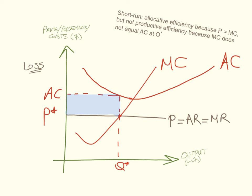Here is another short-run situation where the firm is achieving allocative efficiency because price equals marginal cost, but not productive efficiency because marginal cost does not equal average cost at the profit-maximising level of output. At Q*, where marginal revenue equals marginal cost, the firm is making a loss — a negative economic profit — equal to the box shaded in blue. So while it is achieving allocative efficiency, it's not achieving productive efficiency, and this is another short-run scenario.